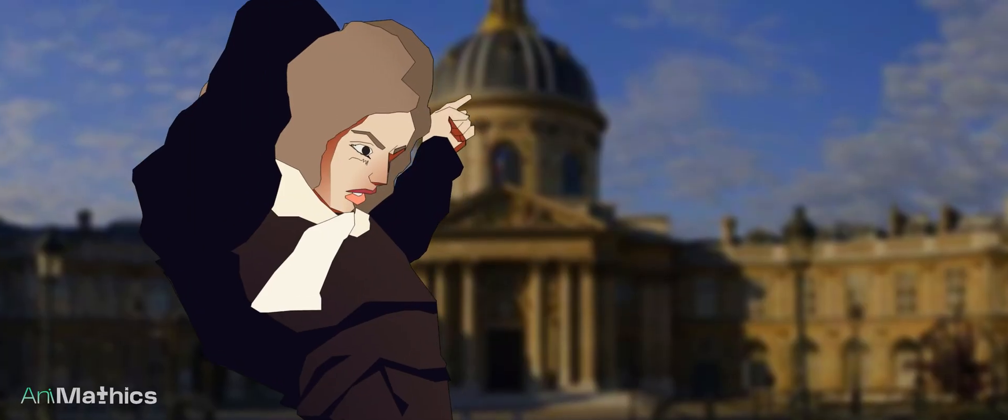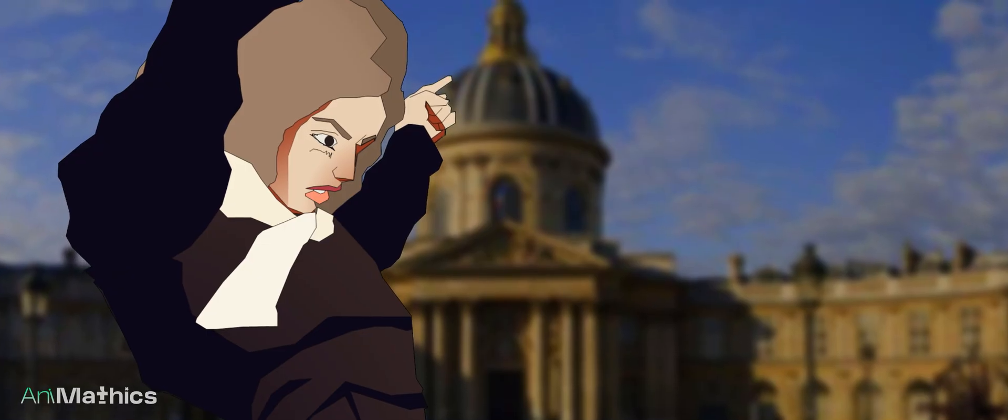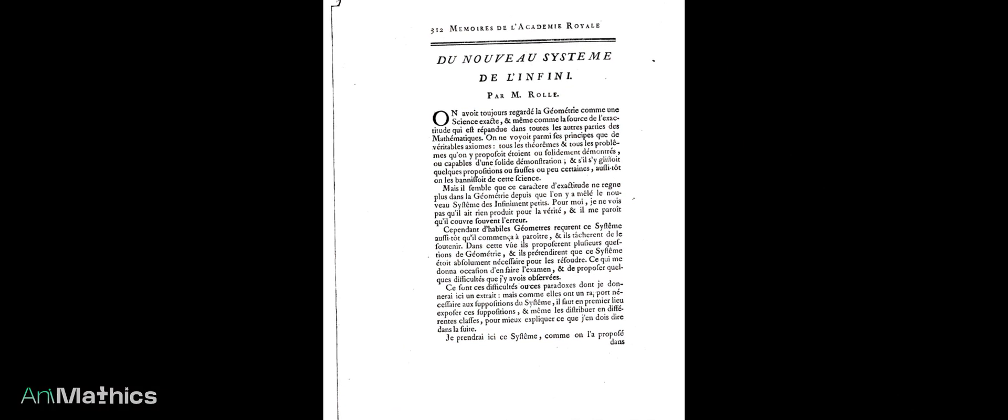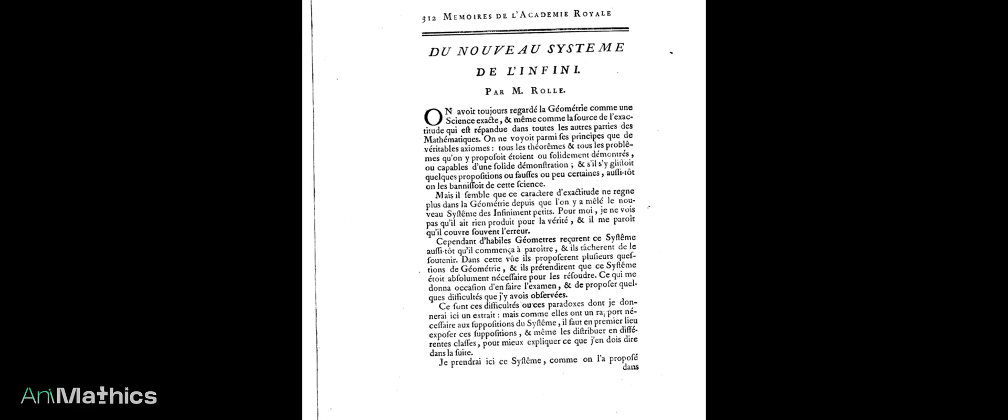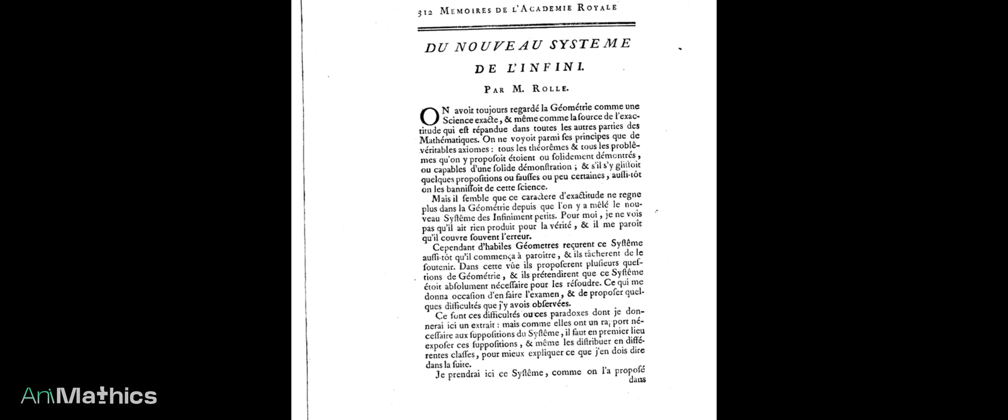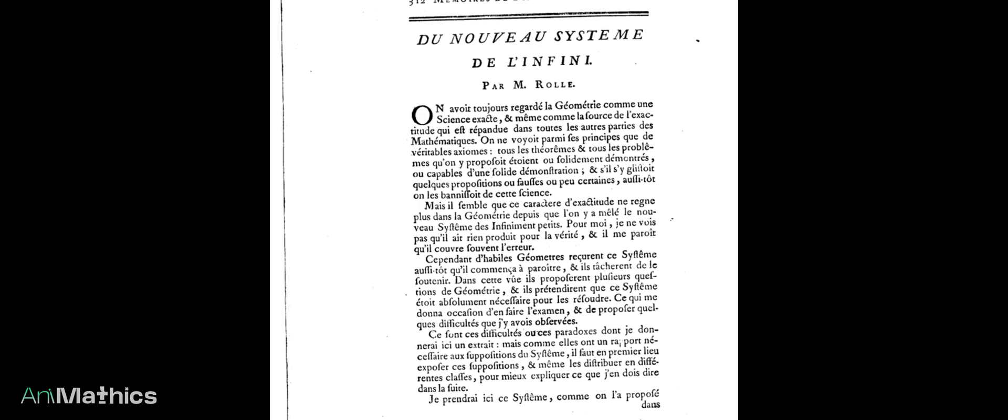Sir Michel Rolle was one of the first to criticize the use of infinitesimal calculations. In his memoir, published in 1703, he argued that calculus was built on shaky reasoning and was nothing more than a collection of clever sophistries.